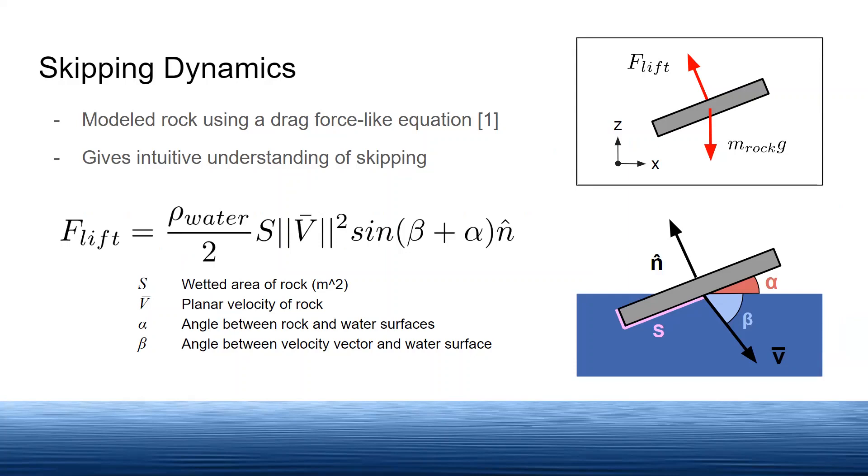This force is directly proportional to the contact area of the rock and favors a flat geometry and velocity. This is intuitive for how we understand skipping.